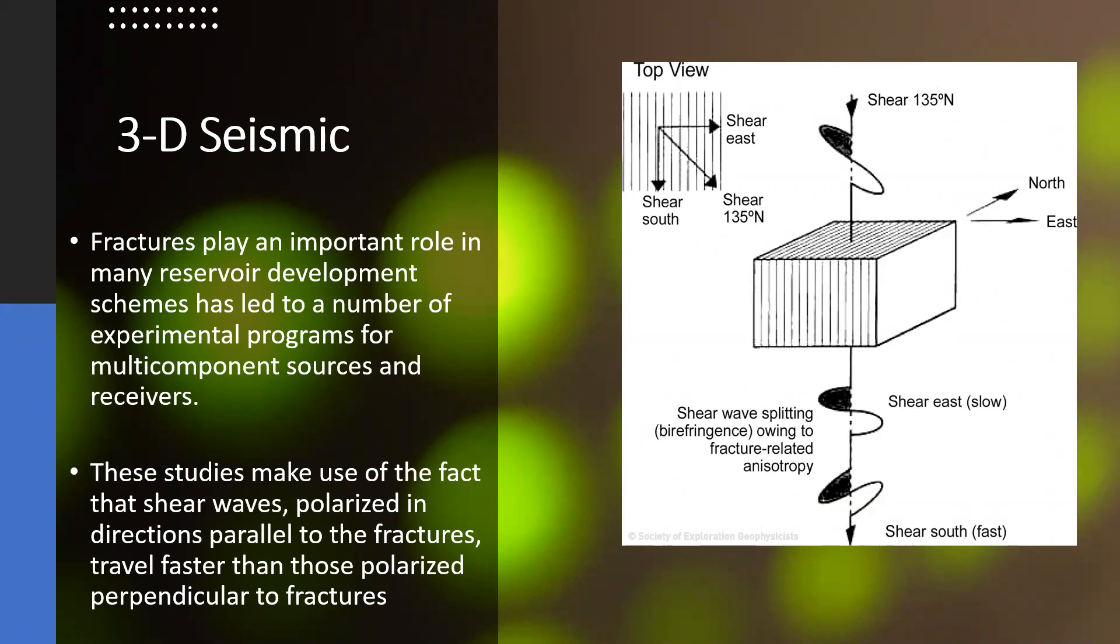Another application of 3C survey or multi-component recording is shown here. The fractures play an important role in many reservoir development schemes and has led to a number of experimental programs for multi-component source and receivers. These studies make use of the fact that shear waves polarized in direction parallel to the fractures travel faster than those polarized perpendicular to the fractures. We can see here in this figure the shear wave is traveling perpendicular to the fractures while in this direction shear wave is traveling parallel to the fractures.